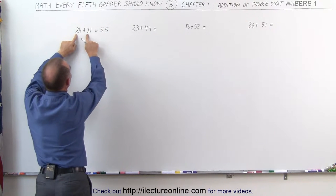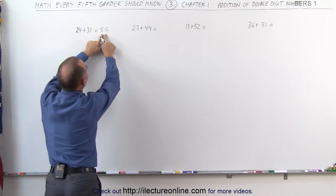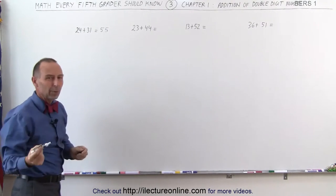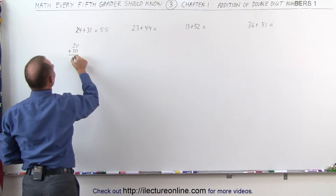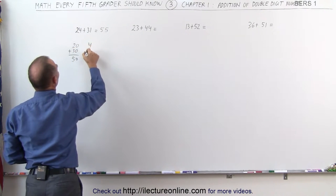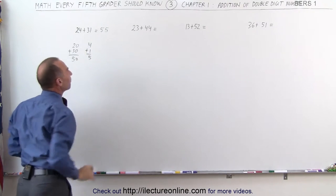In other words, 20 plus 30, and 4 plus 1 gives me 50 plus 5, or 55. Let's write that down. We have 20 plus 30 from the first two numbers, that is 50. And we have 4 plus 1, that is 5. Add them together, you get 55.